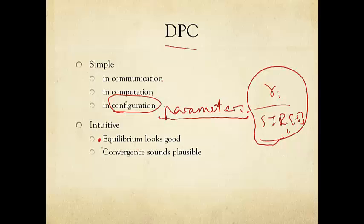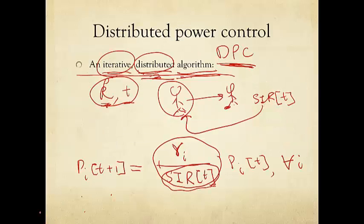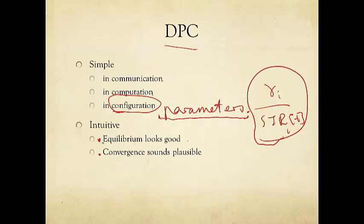But is it trying to do the right thing? Intuitively it is. Let's look at both the equilibrium behavior and the convergence behavior. Equilibrium here means nobody changes from one time to another anymore — there is some time t beyond which no transmit power is moving. Whenever that is the case, clearly the ratio is 1, meaning everybody's SIR is exactly the target SIR. The question is: will you ever reach equilibrium? Will you ever stop?